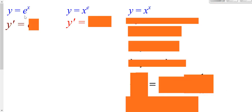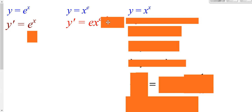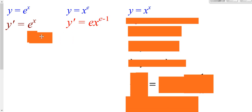Here we have e, which is a number, raised to a power — and you know the derivative of e to a power. Here we have x raised to a number, like x cubed — e is a number, so you just use the power rule: put the exponent in front and decrease it by 1. That's your derivative.